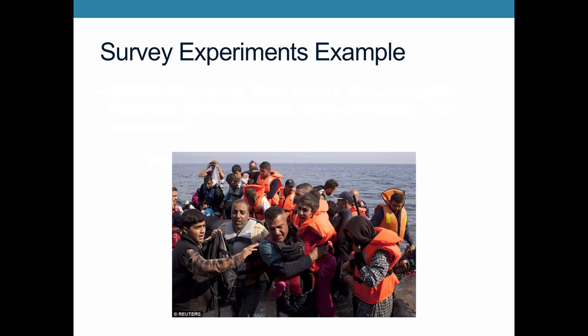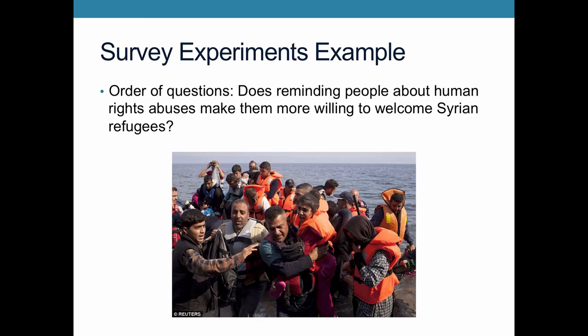Another kind of survey experiment looks at the order of questions — for example, whether reminding people early on about human rights abuses in Syria would make them more willing to welcome Syrian refugees. So looking at that issue of priming: reminding people of potential atrocities that have been committed, does that change their view on this policy issue? Those have been the three types of experiments we see in political science, and we'll talk more in class about what they look like in practice and the pros and cons of each.